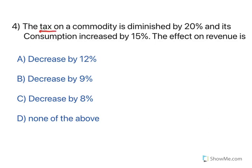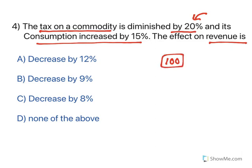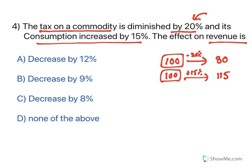Coming to the next one. The tax on a commodity is diminished by 20% and its consumption is increased by 15%. The effect on revenue is asked. The moment you see percent questions, take the standard number as 100. For any percent related question, take 100 as the standard. If tax is diminished by 20%, 100 becomes 80. And consumption is increased by 15%, so it becomes 115. Working with 100 is very easy — that is the reason why for all percentage questions we take 100 as the standard.